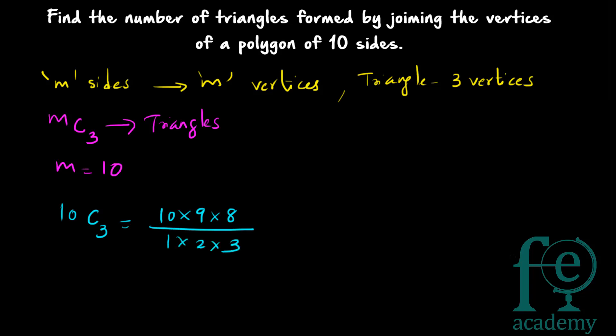10C3 gives you 10 × 9 × 8 divided by 1 × 2 × 3. Cancelling common factors: 2 and 10 give 5, and 3 and 9 give 3, so you get 8 × 5 × 3 which gives you 120. So 120 triangles can be formed by joining the vertices of a polygon of 10 sides. The general formula: a polygon of m sides → mC3 triangles.